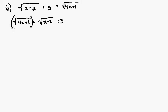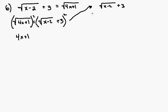Our next step is to go ahead and square both sides. The left side is easy — if you have a square root and you square it, they cancel each other out and you're left with 4x plus 1. On the other hand, we're going to do a little side work over here. So this is the square root of x minus 2 plus 3, times the square root of x minus 2 plus 3. 3 times 3 is 9, so it's plus 9.